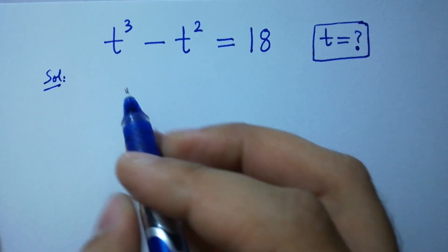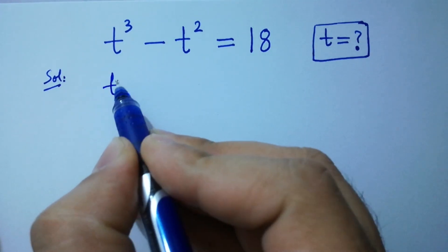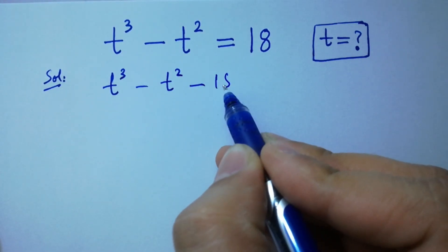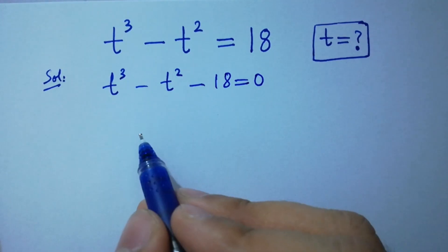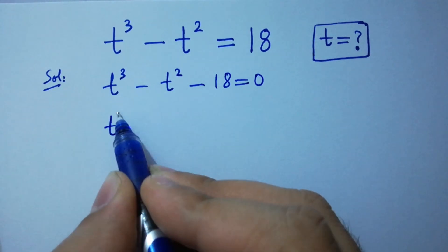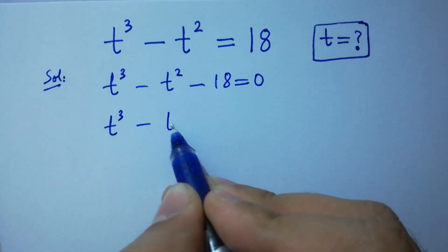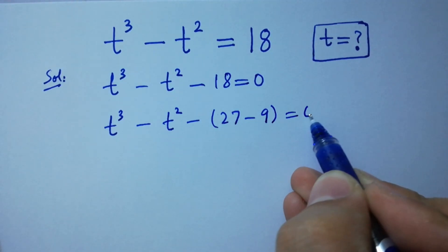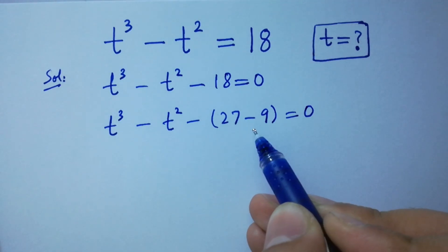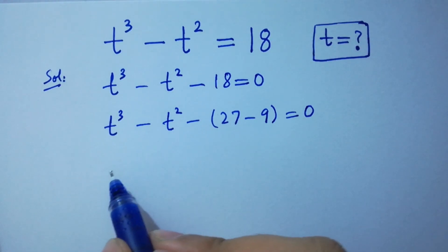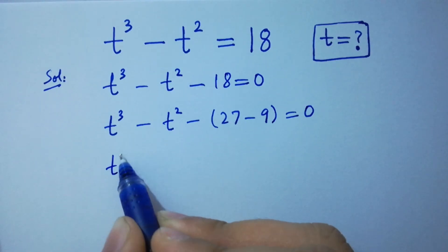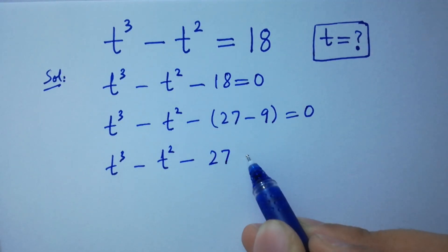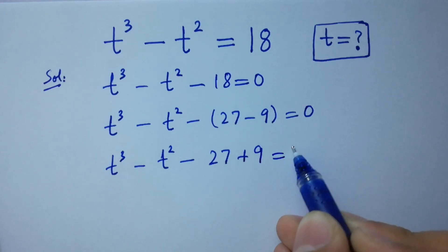It can be written as t cube minus t square minus 18 equal to 0, which is same as t cube minus t square minus 27 minus 9 equal to 0, since 27 minus 9 is 18.